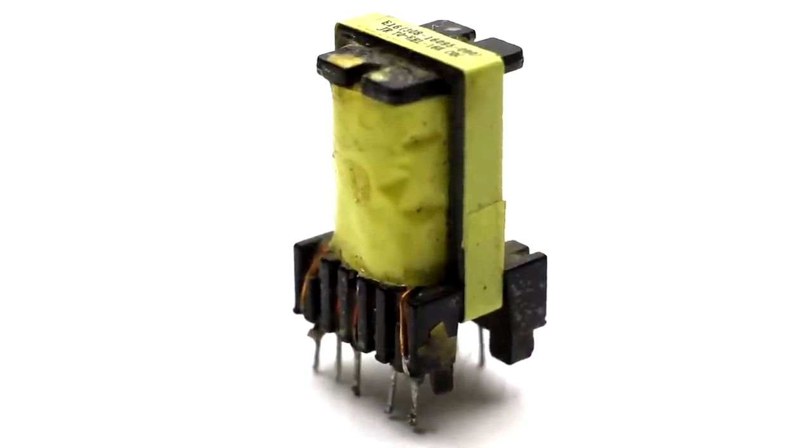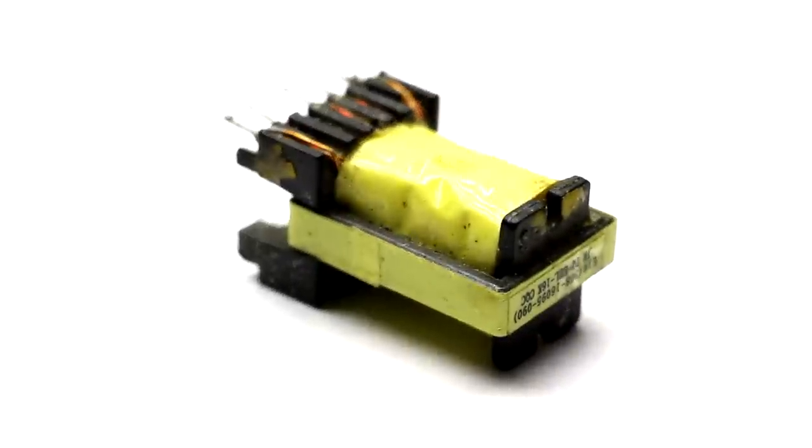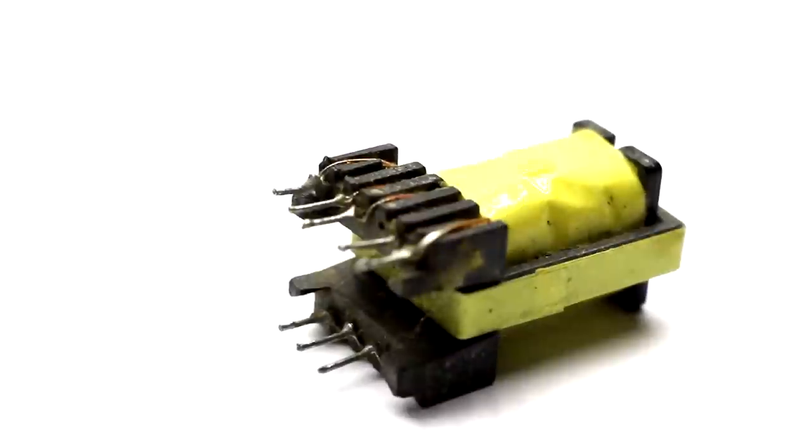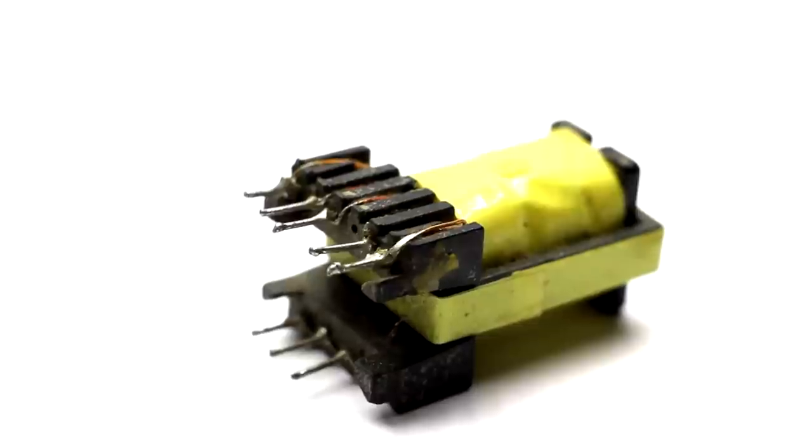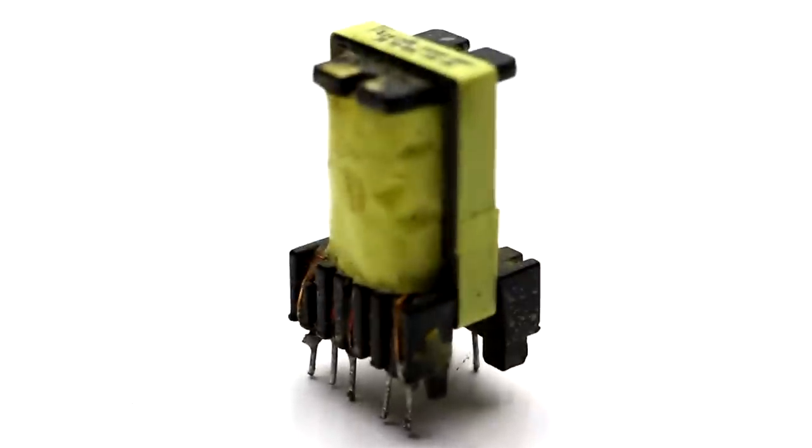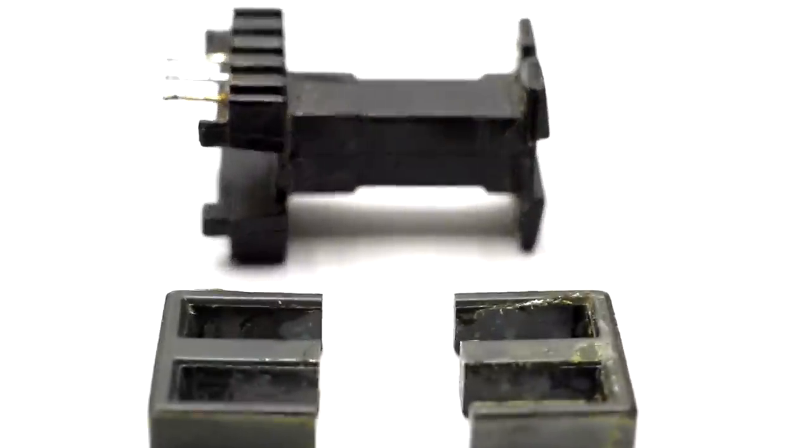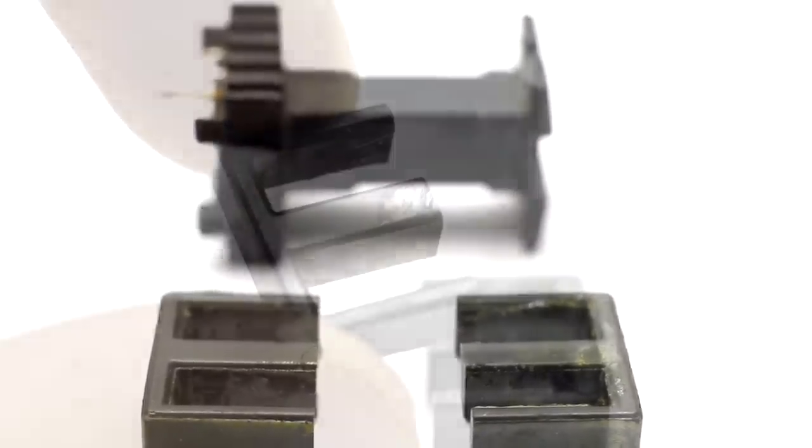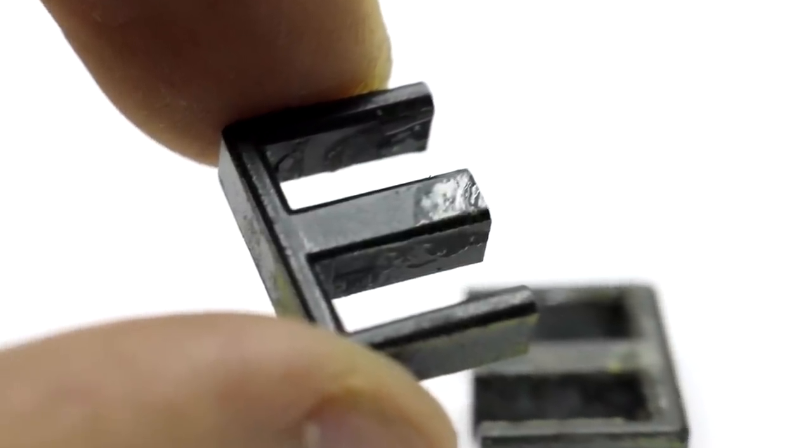Next, the transformer needs to be dismantled. The ferrite core consists of two halves that are glued together. Gently heat the core with a soldering iron for 5 to 10 minutes. The glue will loosen and the halves can be disconnected. In the description you can find a link to the video where I show the simple methods of disassembling pulse transformers.